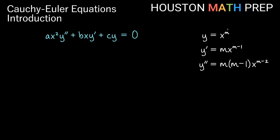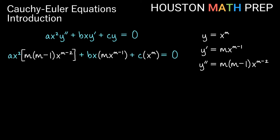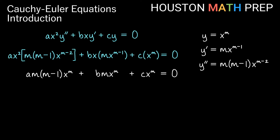So that we can figure out a pattern of x to the m being a solution, let's plug all of this into our equation. We get ax squared times y double prime, plus bx times y prime, plus c times y equal to zero. When we multiply x squared into the y double prime term, the power goes up by two, changing the power back into x to the m, giving us a times m(m minus one) times x to the m. A similar thing happens in the b term: x times x to the m minus one gives us bm times x to the m.